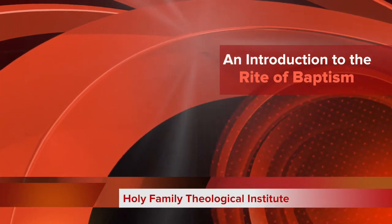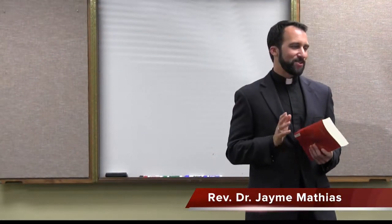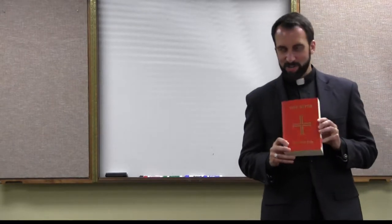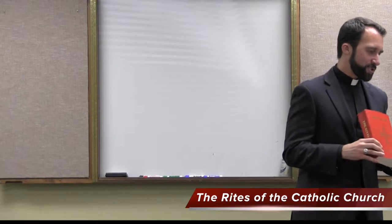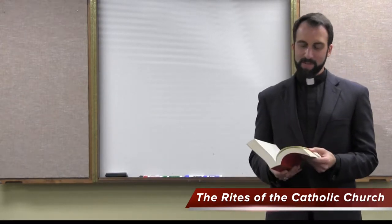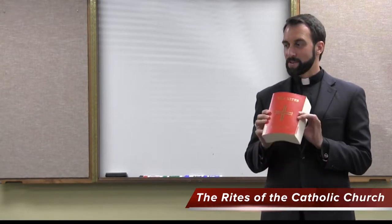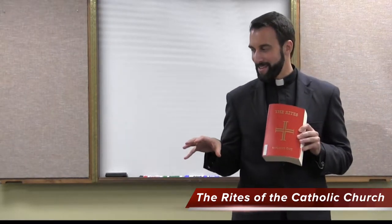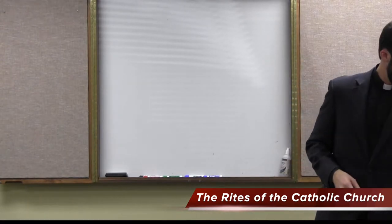Here we go. So the previous classes have all come from Bishop Theodore Eastman's work, The Baptizing Community. Now we're going to shift to The Rites of the Church. The Church has two thick volumes of rites, some of which include baptism and confirmation and the Rite of Christian Initiation for Adults. So we're going to go from the history of baptism to the actual rites that we use in the Church.